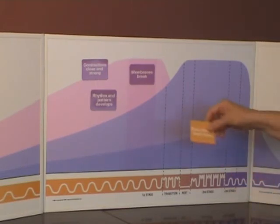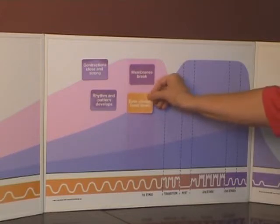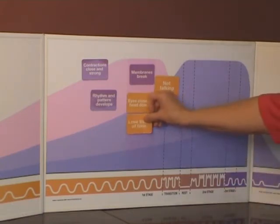The yellow ones explain the emotions and feelings that a woman might have or that the husband might see. Her eyes closed, her head's down, she's not talking much, she's lost track of time.